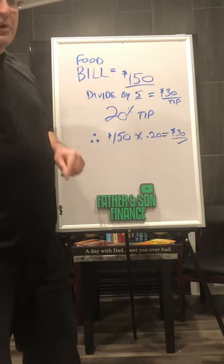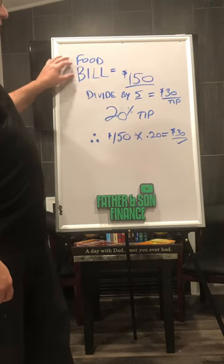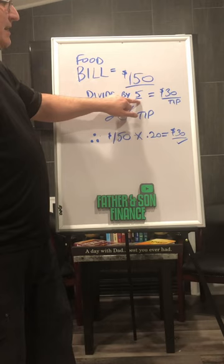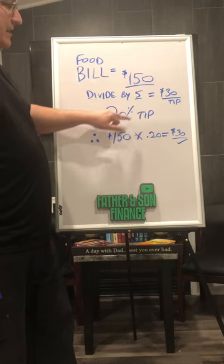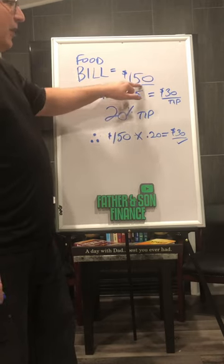Have a nice time at dinner. Don't worry about bringing your calculator. You get out the food bill — 150 bucks. Always divide by the number 5. That's a 20% tip every time.